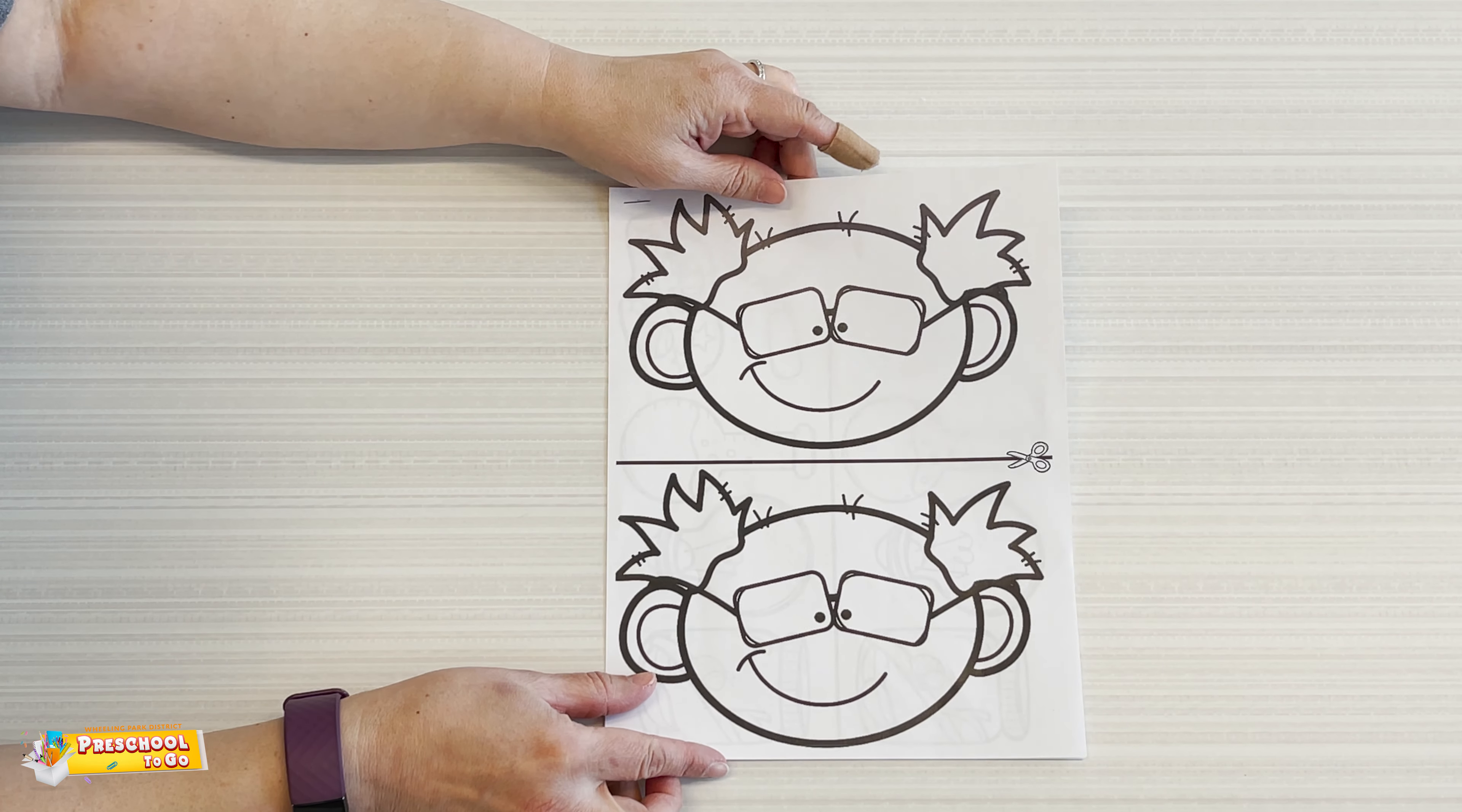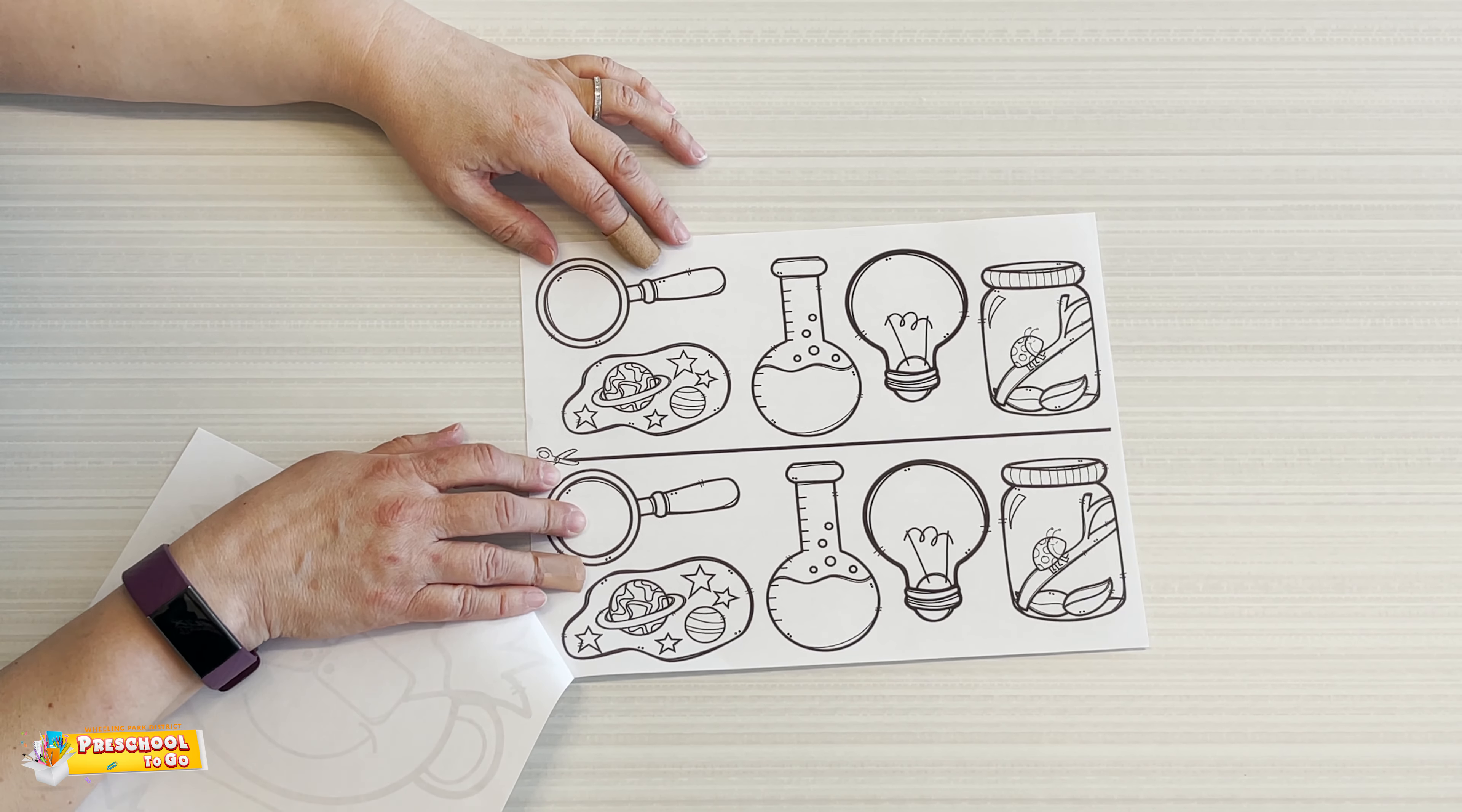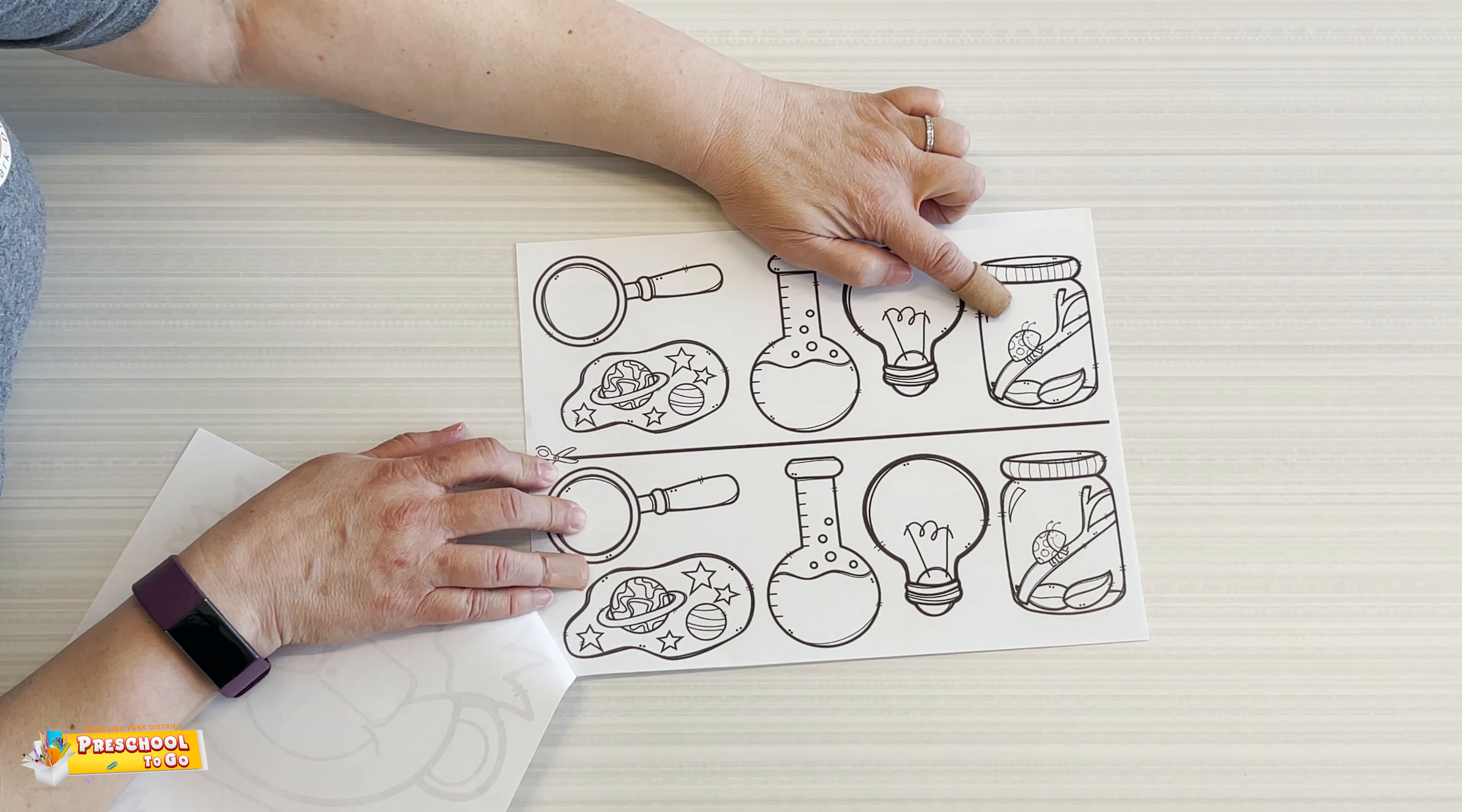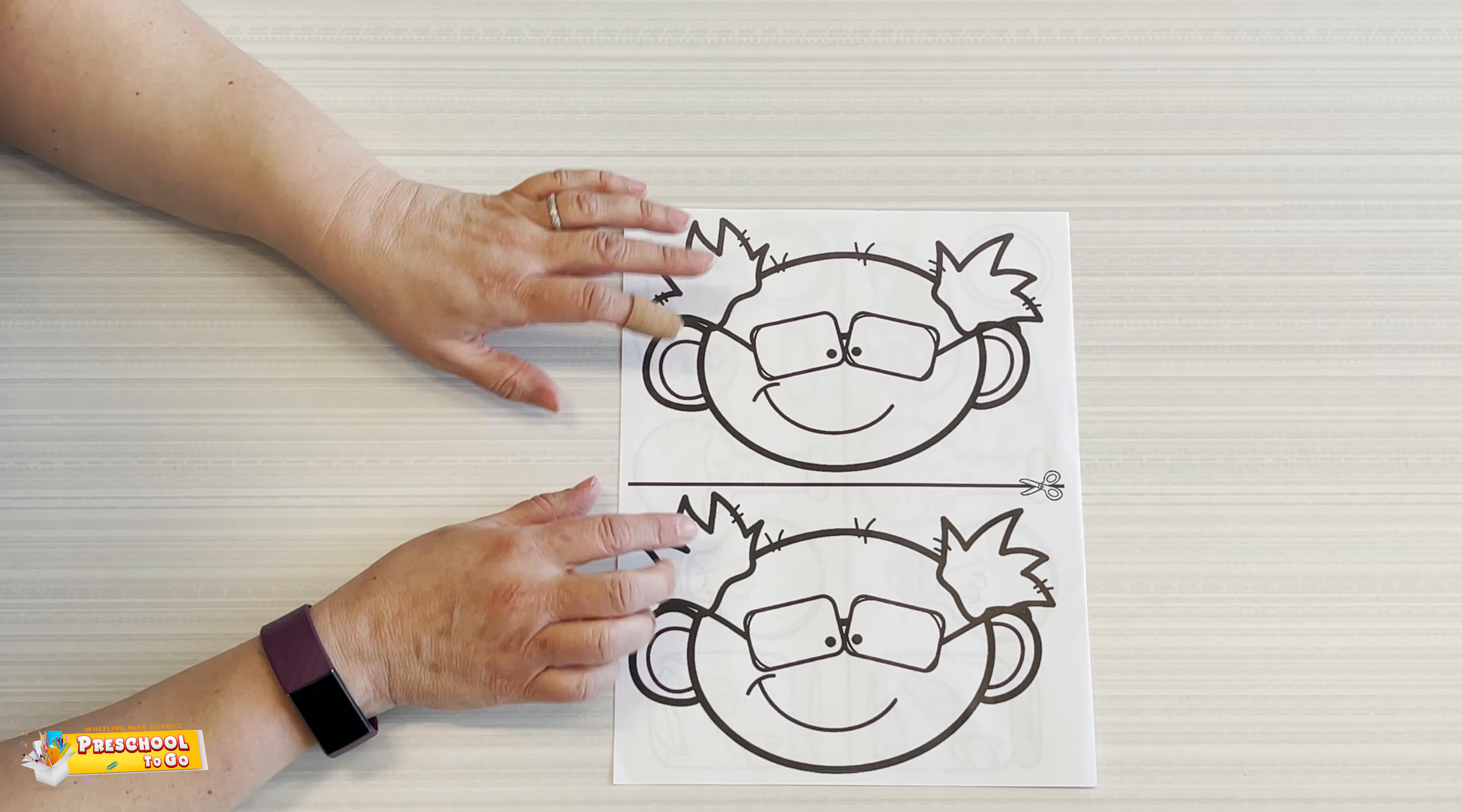Then we have a silly scientist headband that you're going to make. We have this silly mad scientist here and then we have some different objects on here like a magnifying glass, outer space, a light bulb, a test tube, and then a bug in a jar. Looks like a ladybug. And you can cut down this line and it can wrap around your head. You can put one of the scientists in the front and one in the back.